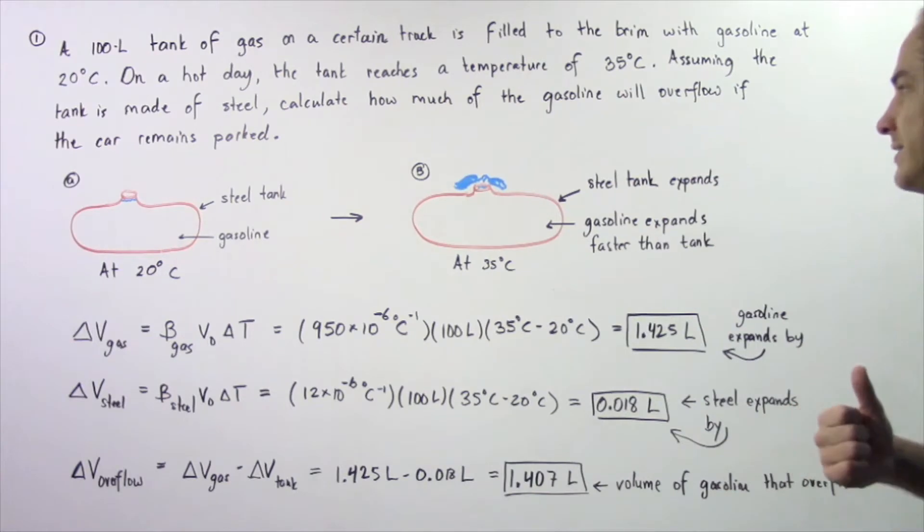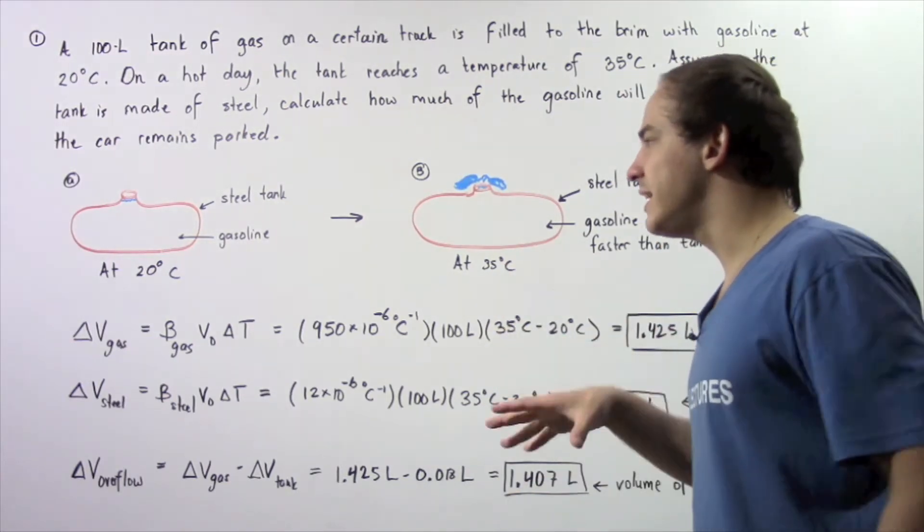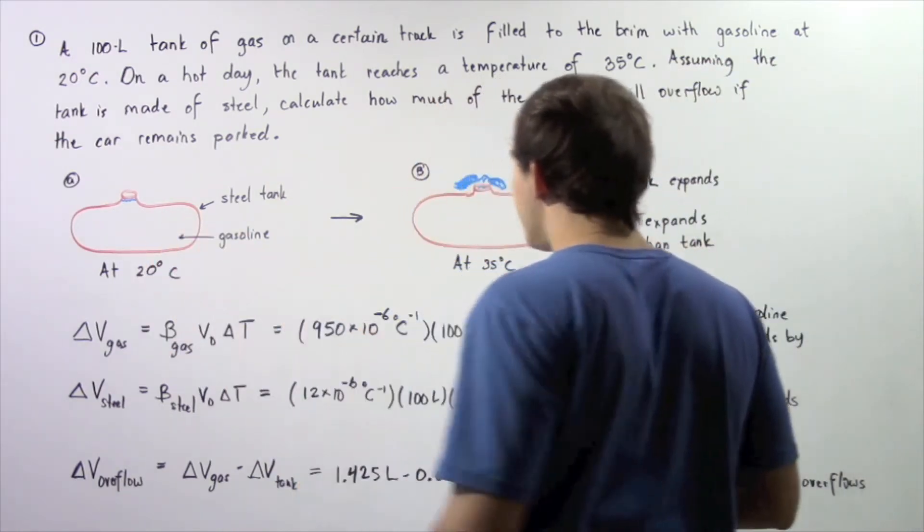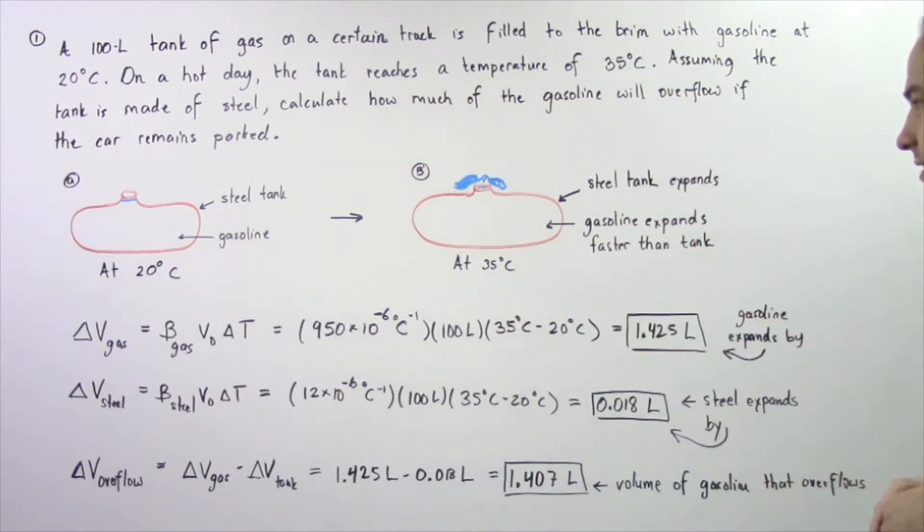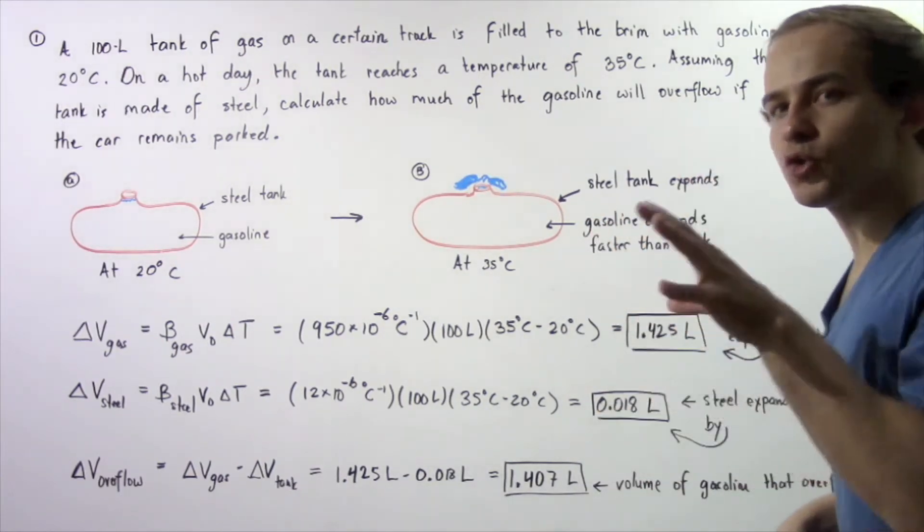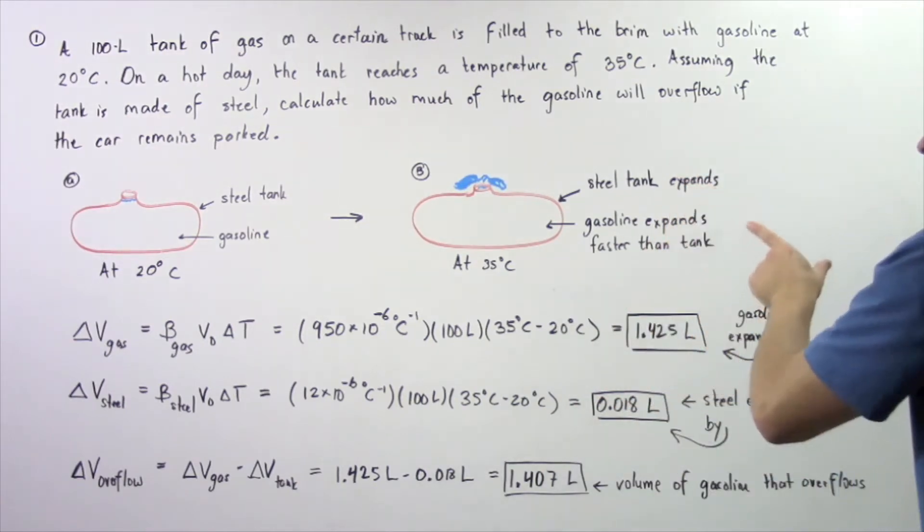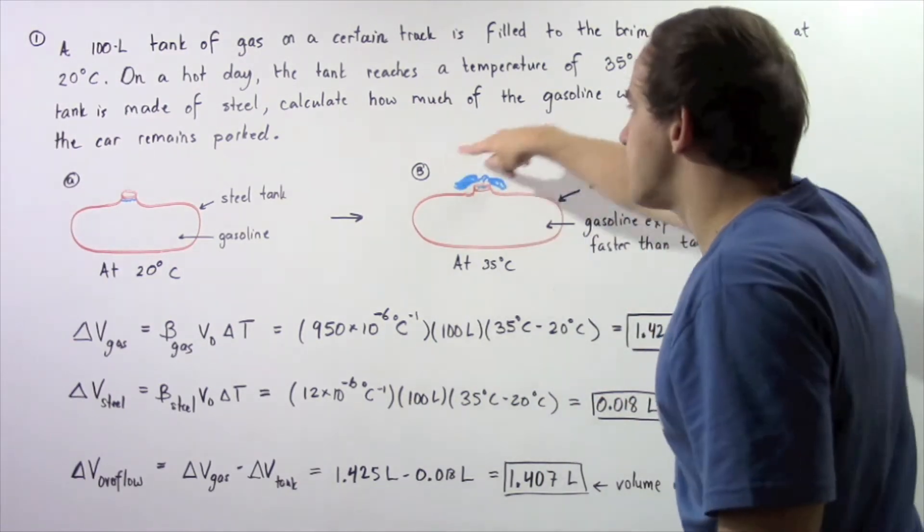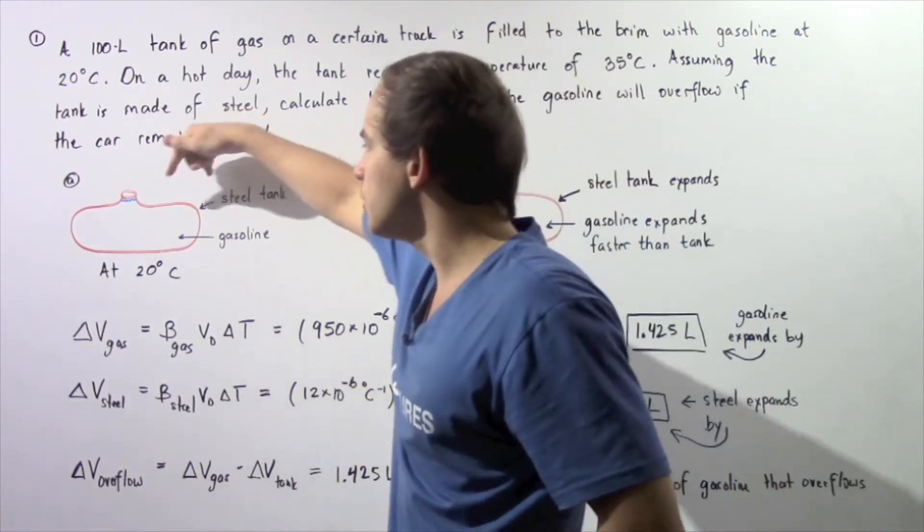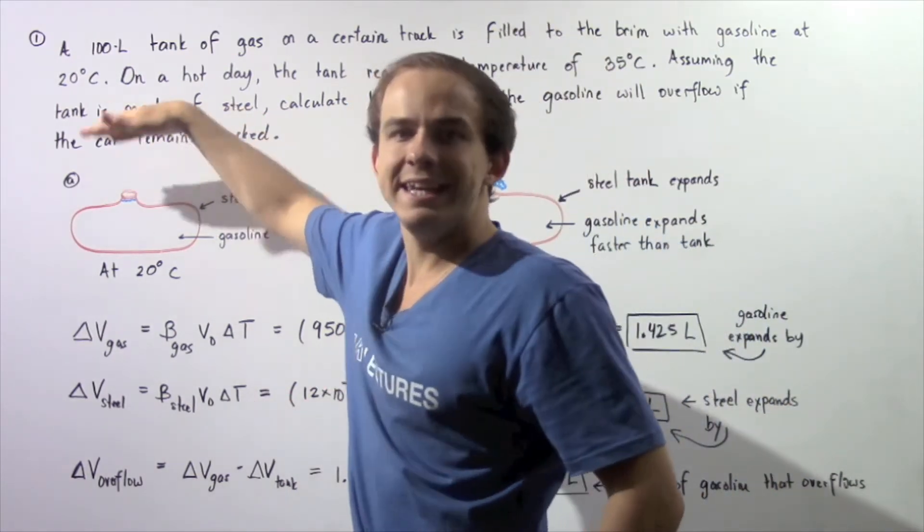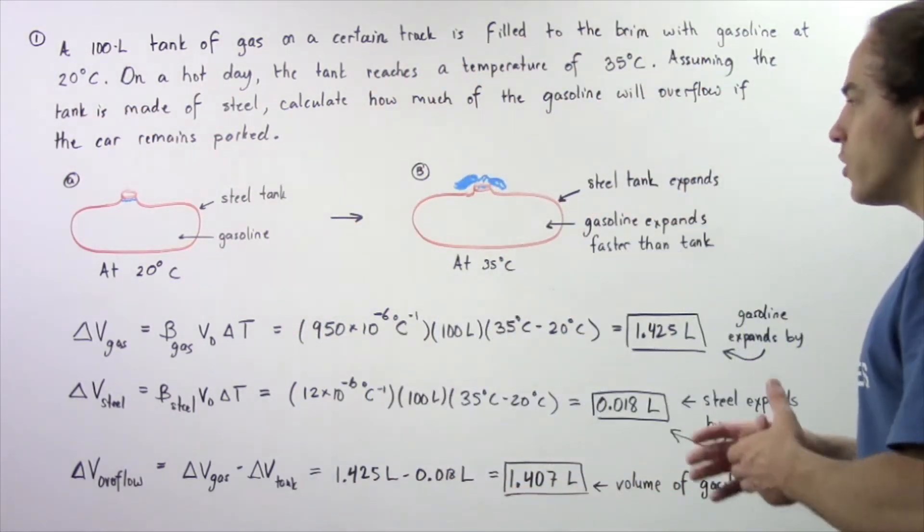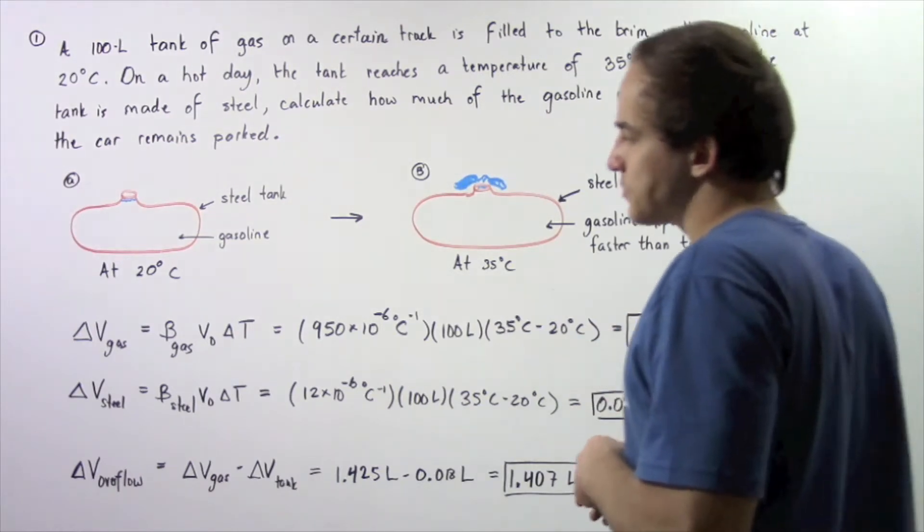Now on a very hot day, the tank and our gasoline both expand. So we go from 20 degrees Celsius to 35 degrees Celsius. Now, because the gasoline expands at a faster rate than our steel tank, some of that gasoline will end up overflowing. Because our gasoline is filled to the brim, to the top of our tank. So we're going to solve this problem in three steps.